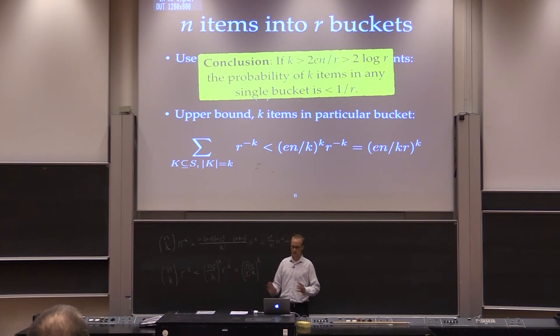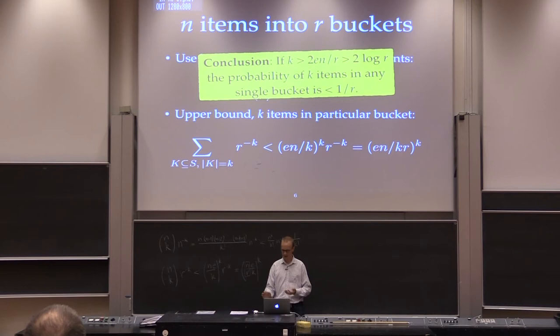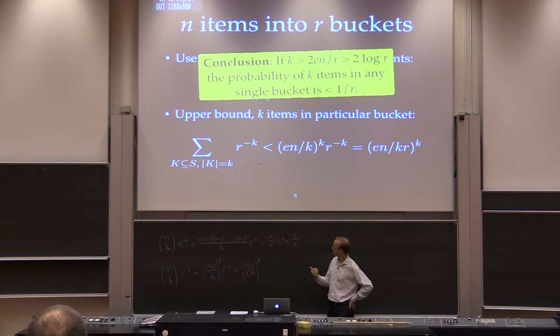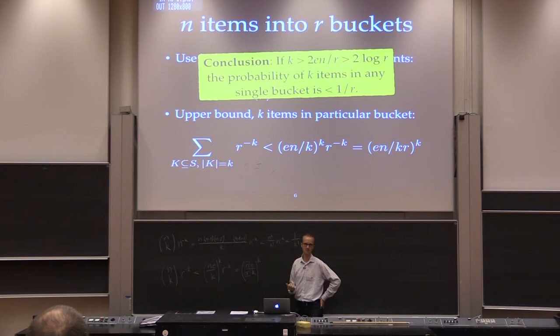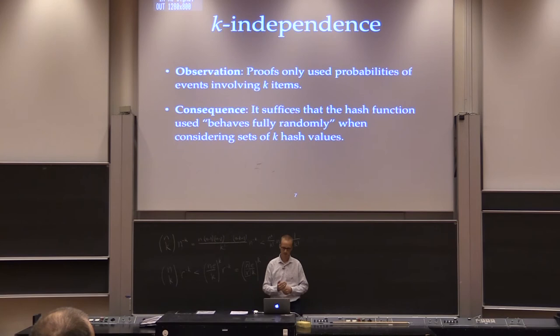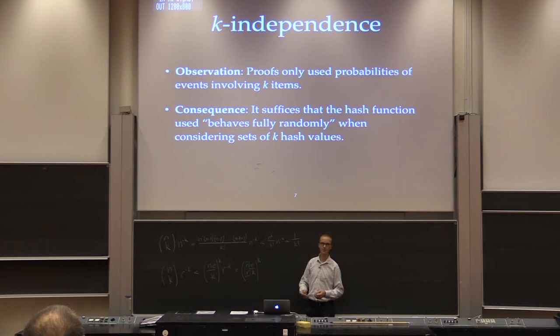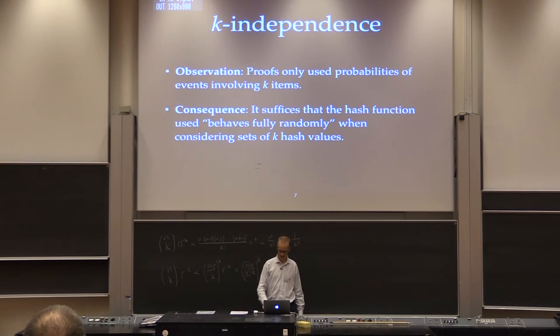All of this used the assumption that we were hashing randomly and independently. But if you look at these proofs, all the probabilities are of the form r to the minus k or n to the minus k, because they concern events on k hash values. The probabilities I actually need for this analysis just speak about k hash values being in a certain way — colliding. The consequence is that if we could come up with a hash function that looks fully random when we look at k hash values, all these results would go through. This motivates the notion of k-independence.